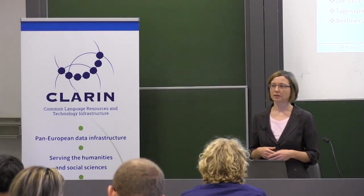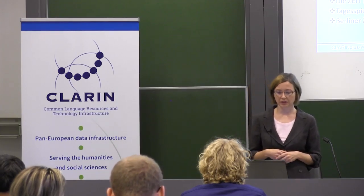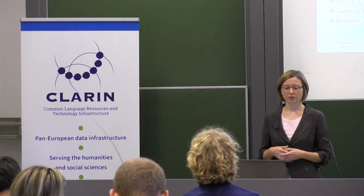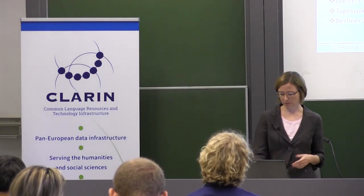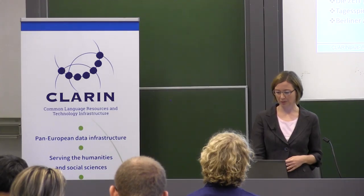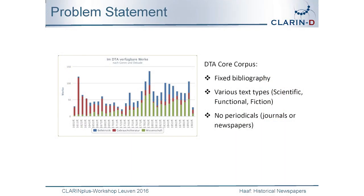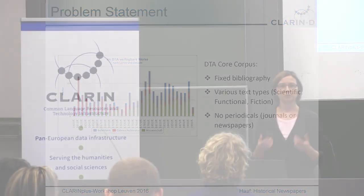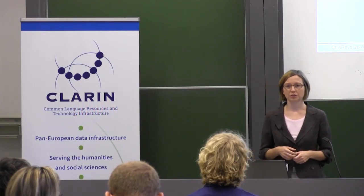But these are modern newspapers, as you can see — the weekly newspaper Die Zeit, or Berlin newspapers, the Tagesspiegel and Berliner Zeitung. The DTA core corpus was created based on a fixed bibliography containing very different text types from scientific texts and functional texts to fiction, but it didn't contain any periodicals. So we didn't have journals or newspapers in our original bibliography.